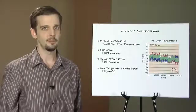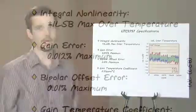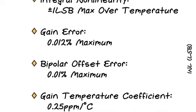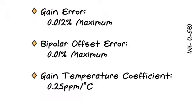Gain error is guaranteed to be better than 0.012 percent on par with the best references available. Offset in the bipolar ranges is 0.01 percent and offset in the unipolar ranges is vanishingly small dominated by leakage currents.